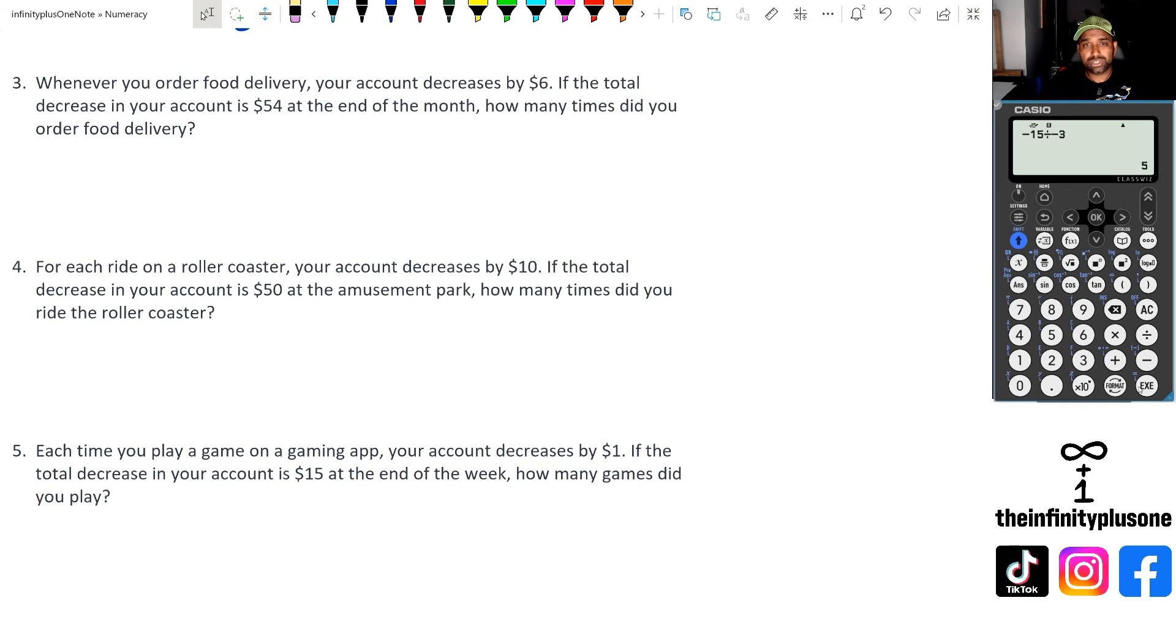Last three questions, as usual, I'll pause and give you some time to have a go with these questions. Alright, so question three, we've got account decreases by $6 every time you order food delivery. So that's negative six. Account is at negative 54 at the end of the month. So we've got negative 54 divided by negative six, which means there were nine times food delivery.